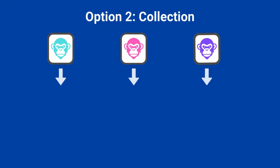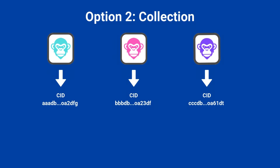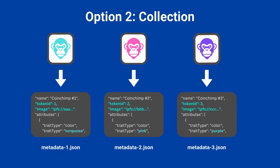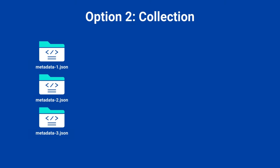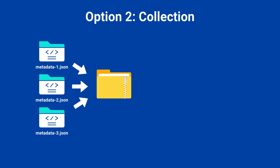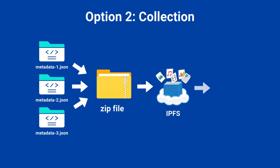For option two — unique images for each token — you'll need to create individual metadata files for each token, each referencing its specific image CID. For example, if you have a maximum supply of 10, upload 10 images to IPFS, resulting in 10 CIDs. Then create 10 metadata files in JSON format, with each file linking the correct image CID to its respective token. Upload all metadata files as a group, maintaining the correct sequence. I covered this option in a future video. For this tutorial, I'll focus on option one. Before deploying, test the accessibility of your uploaded files through an IPFS gateway to ensure everything works correctly. Once deployed, the data cannot be modified.